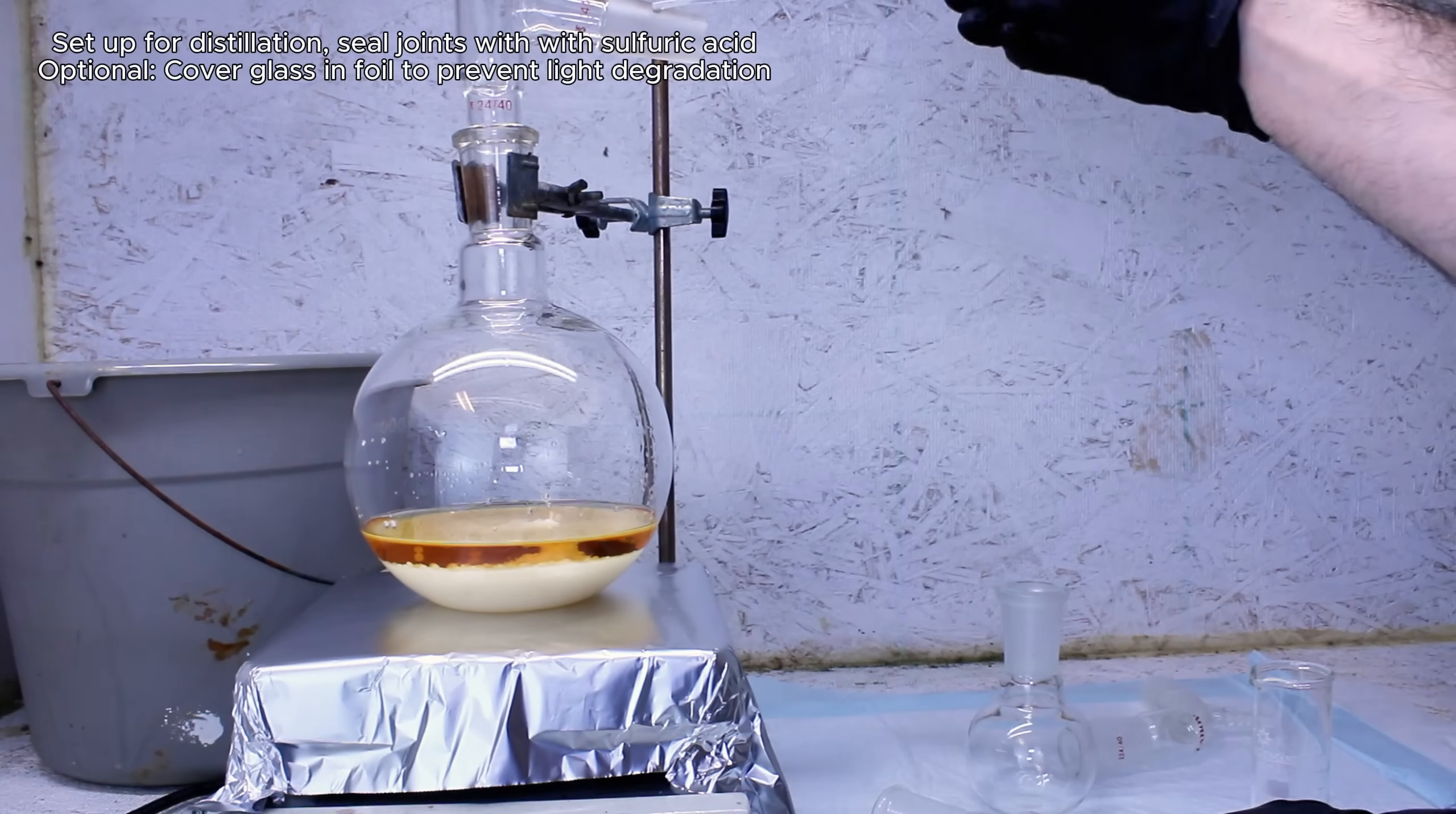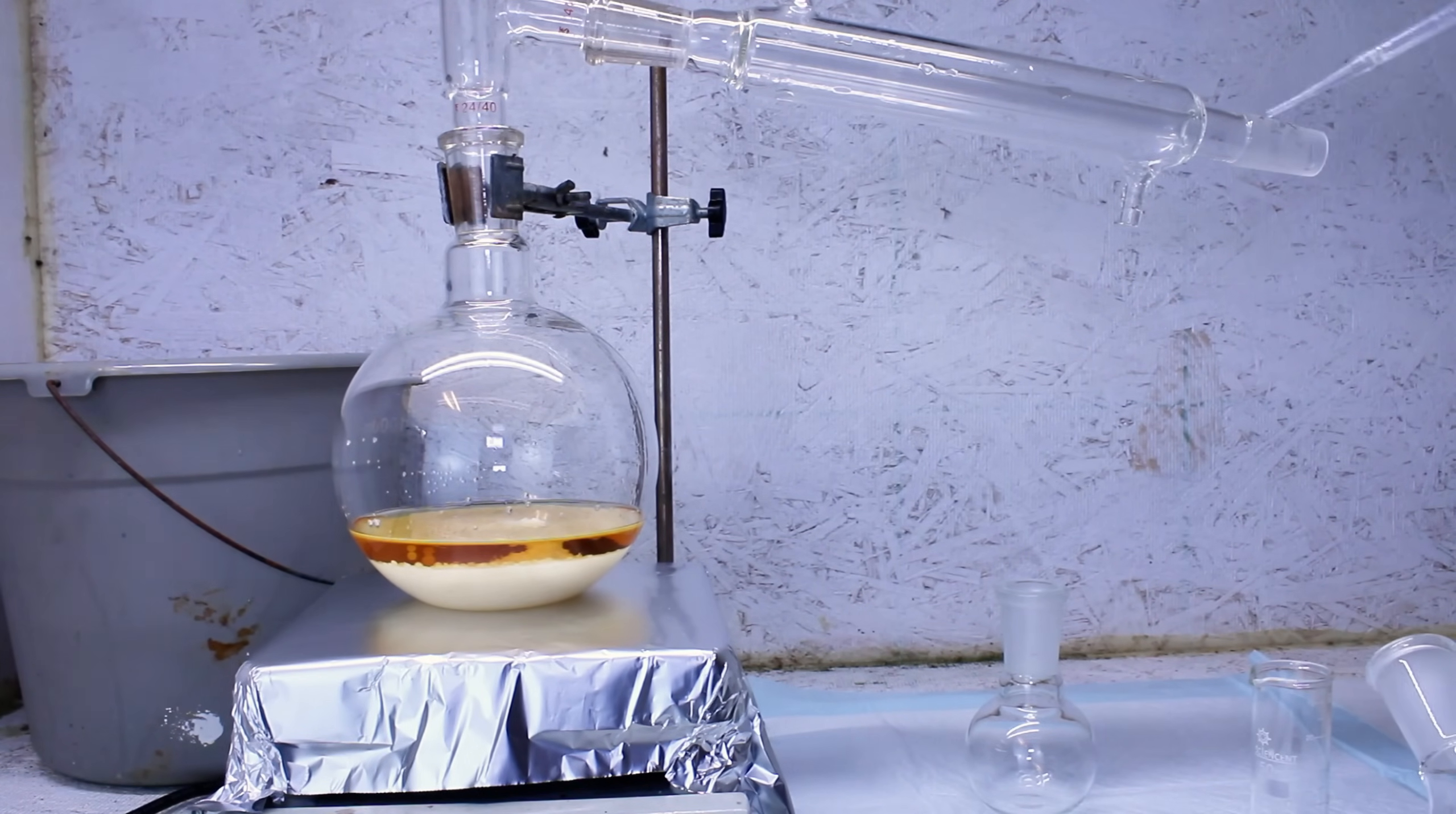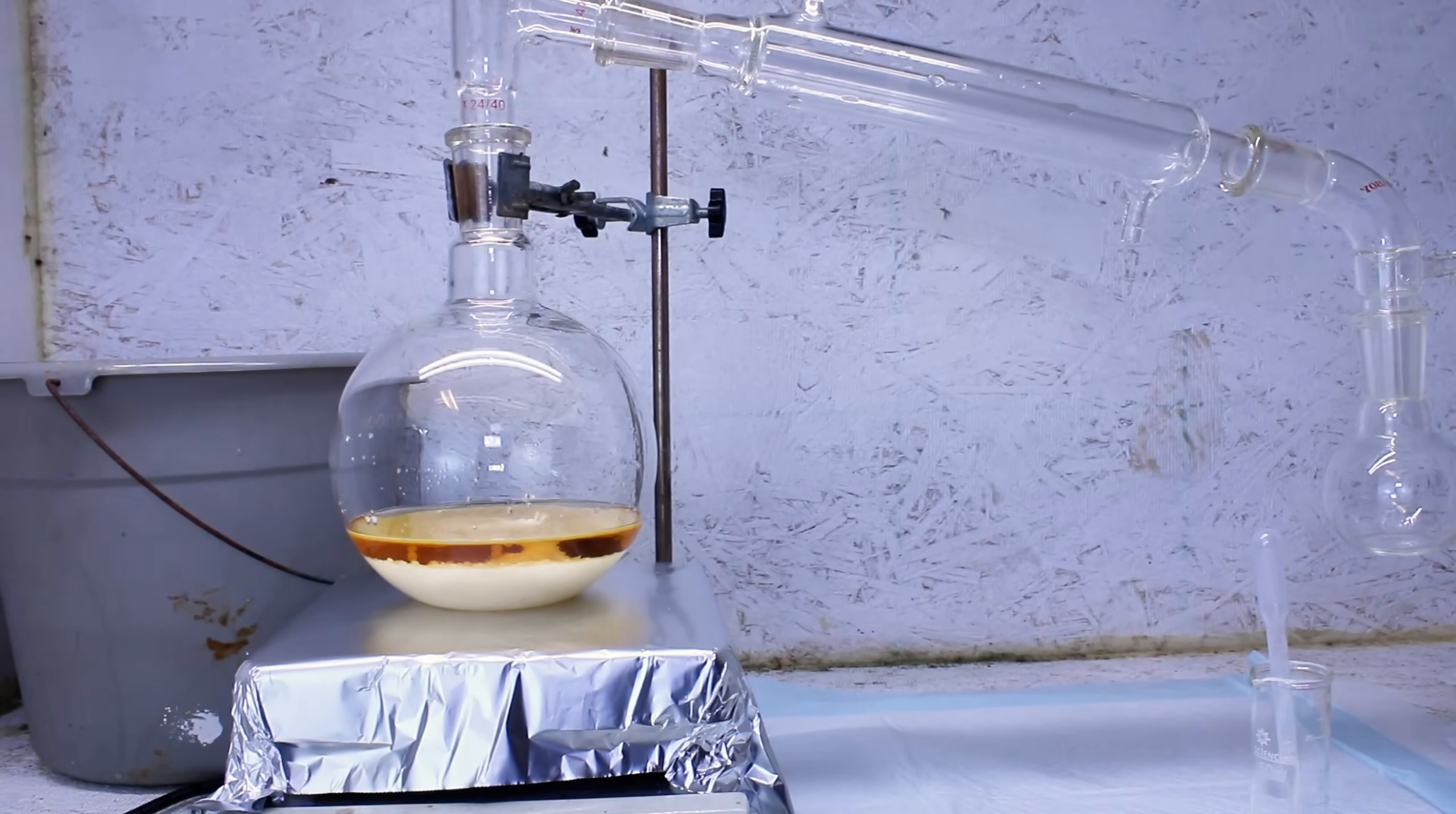This is then heated to begin the reaction, and as a side note, I almost always do this in a heating mantle, but for this video, I decided to do it on a hot plate to make the reaction easier to see. Now, when sodium nitrate is heated with sulfuric acid, two reactions are possible depending on the temperature the reaction is conducted at.